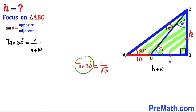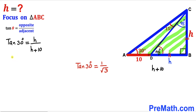So we write tangent of 30 degrees equals h divided by h plus 10. We know that tangent of 30 degrees is 1 divided by square root of 3, so our equation becomes 1 over square root of 3 equals h divided by h plus 10.